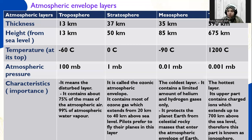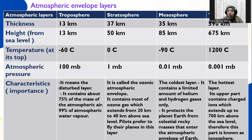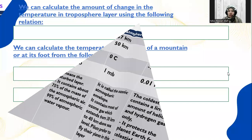The mesosphere: its thickness is 35 kilometers, height from sea level is 85 kilometers, temperature at its top is negative 90 degrees, atmospheric pressure is 0.01 millibar. It is the coldest layer, contains limited amounts of helium and hydrogen gases, and protects the Earth from celestial rocky masses like meteors and meteoroids coming from outer space. The thermosphere: its thickness is 590 kilometers, height from sea level is 675 kilometers, temperature at its top is 1,200 degrees, atmospheric pressure is 0.001 millibar. It is the hottest layer, and its upper part contains ions — called the ionosphere — which handles all wireless communications.